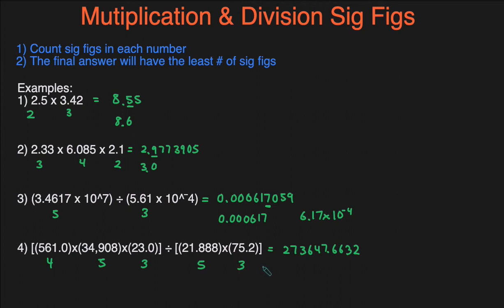So let's underline that third sig fig — that would be the first, that's the second, and that's the third sig fig. We take a look at the number next to it and see that this six is greater than five, so we need to round this up. That gives us 274, and then we just add zeros until we reach the decimal point, making the final answer 274,000. Or if you report in scientific notation, it would be 2.74 times 10 to the power of 5.